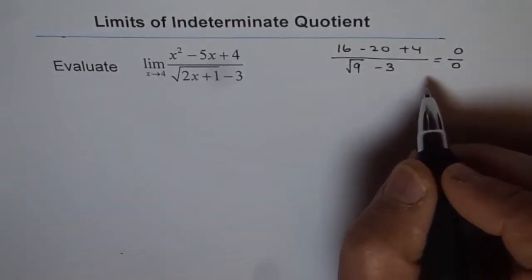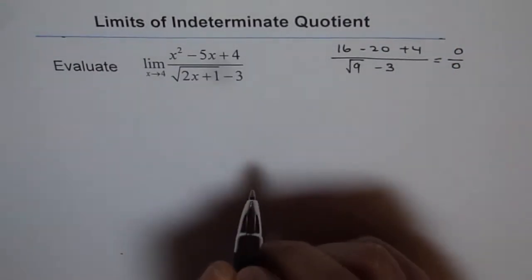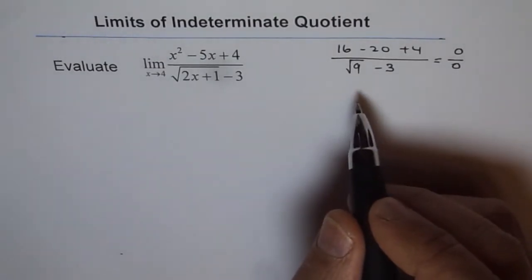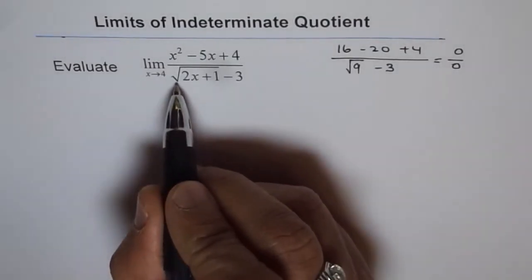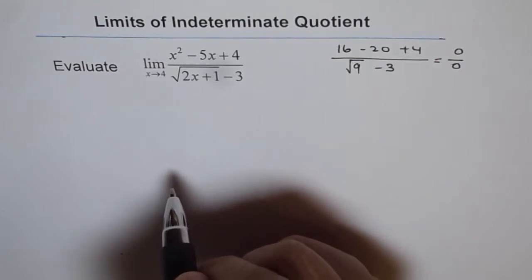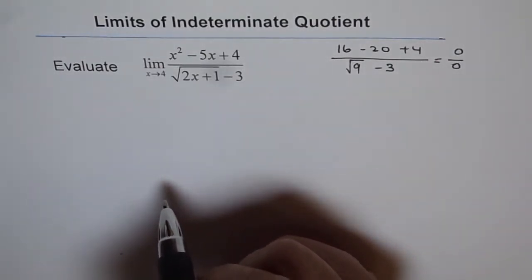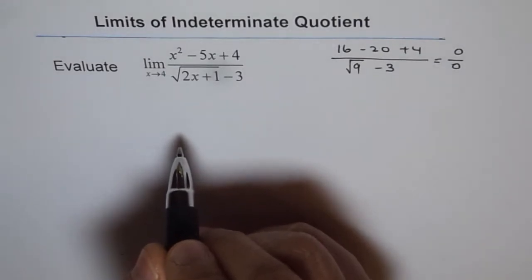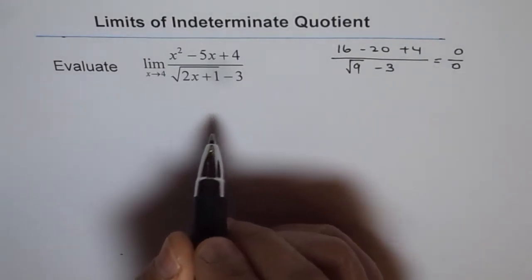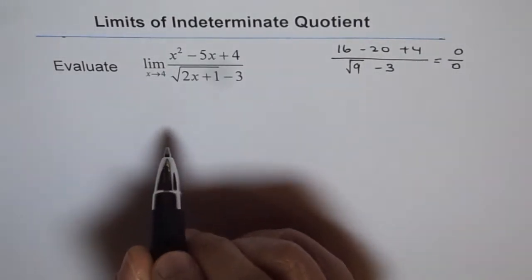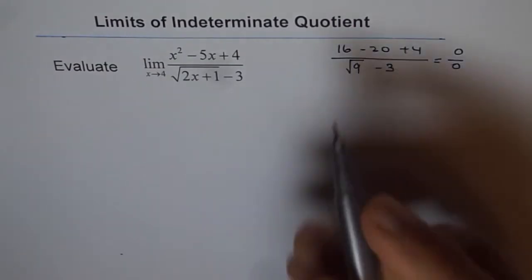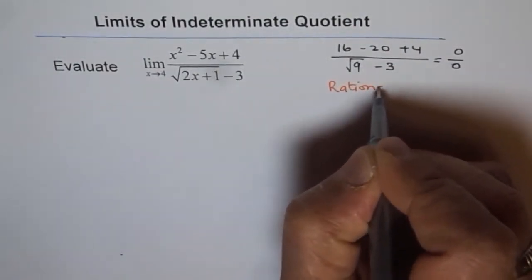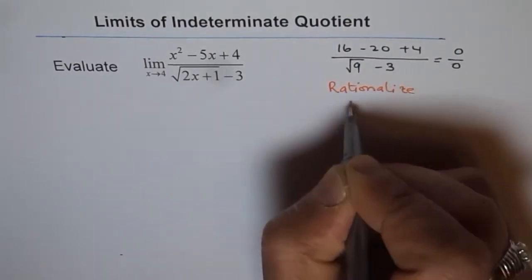So we get an indeterminate quotient. To solve this, since we have a square root in the expression, the best approach is to rationalize. When we rationalize, we multiply and divide by the conjugate. Here we will rationalize the denominator.